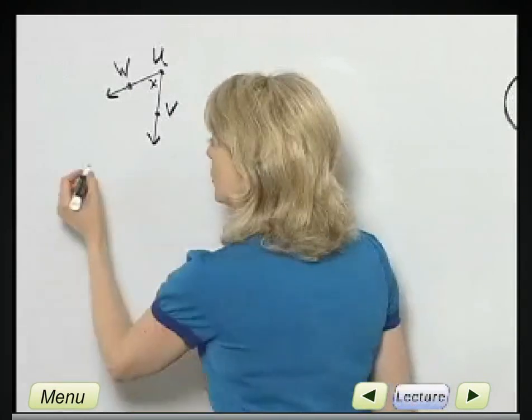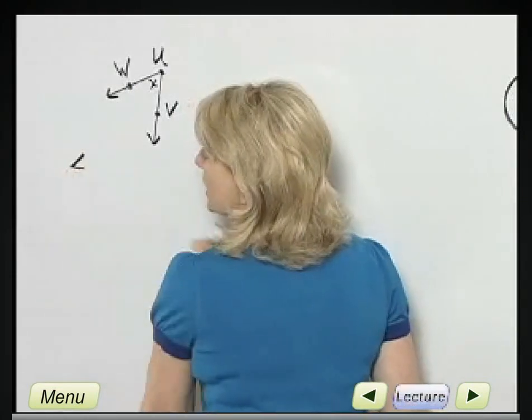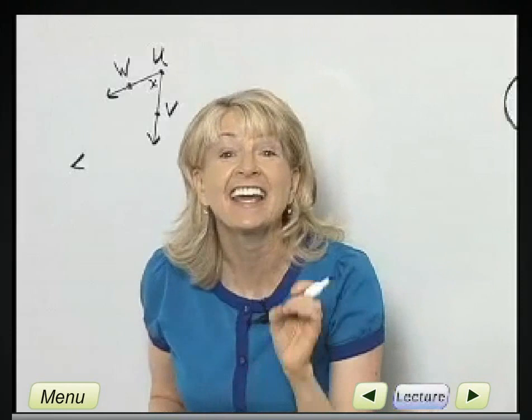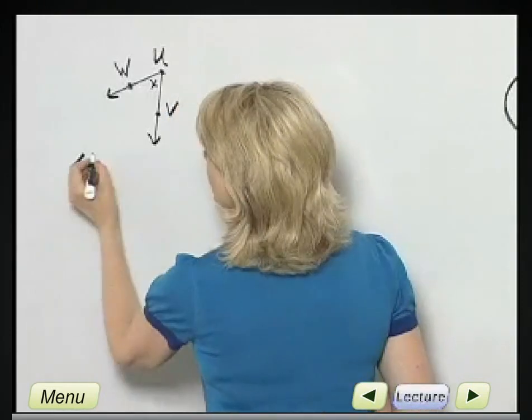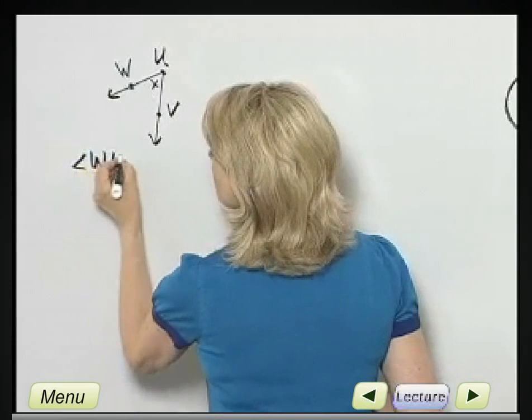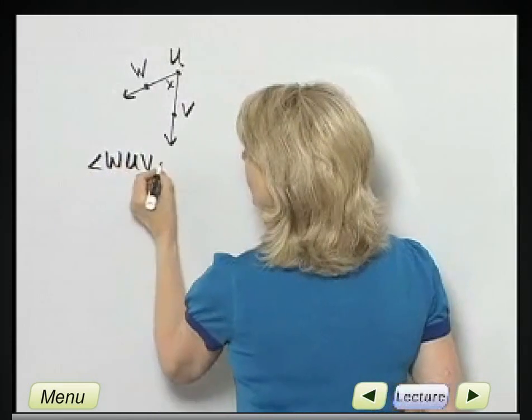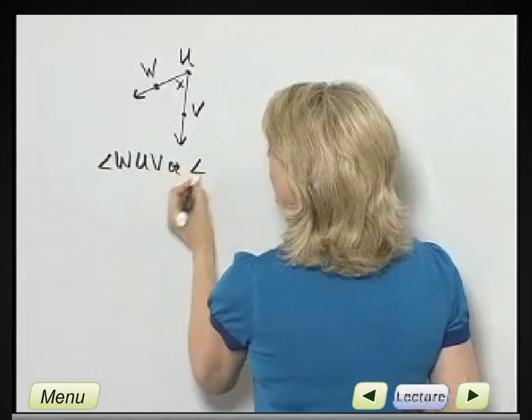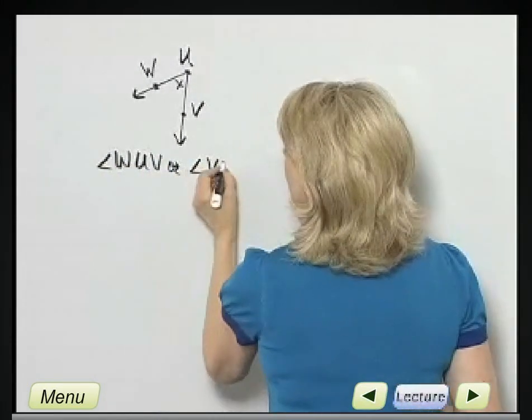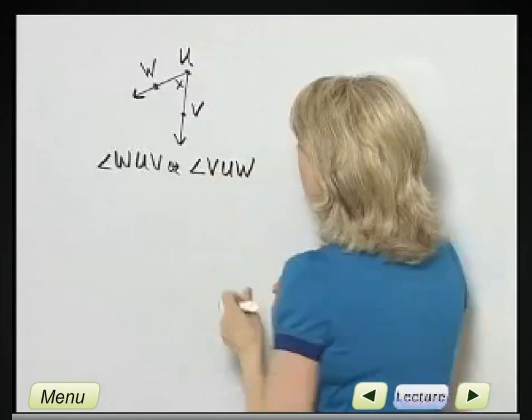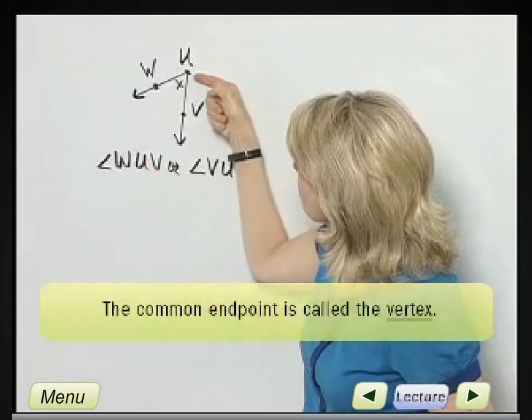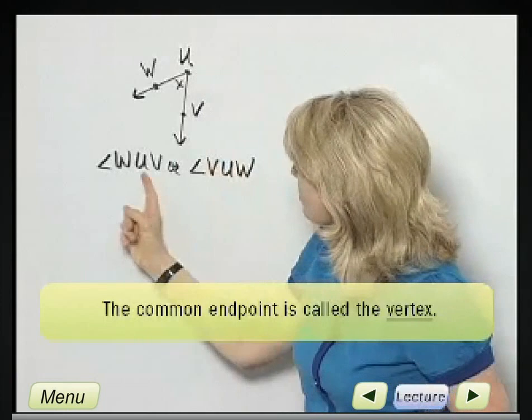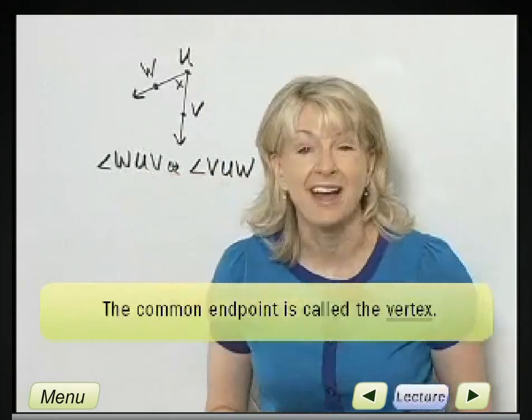Now how can we list this angle? We can use this notation for angle. Now that's not a less than symbol. It's an angle symbol. I can call this angle WUV, or I can call it angle VUW. Notice I do put what we call the vertex, U is the vertex, in the middle each time when I'm labeling my angle.